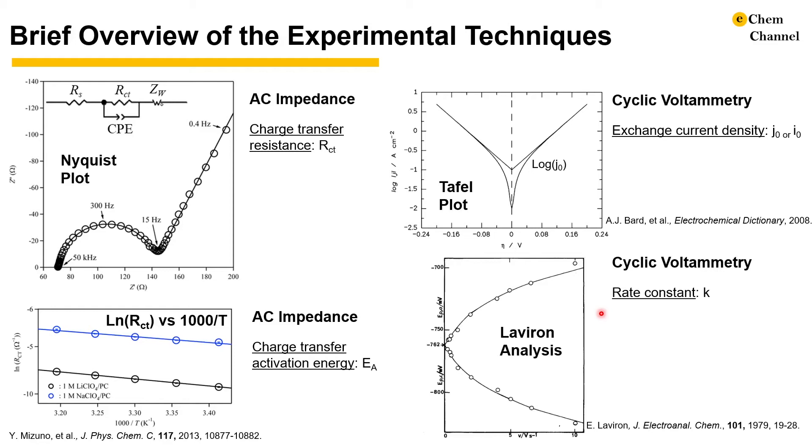For example, exchange current density is important to corrosion science because it can help calculate the corrosion rate in the unit of mm per year with the help of Faraday's laws of electrolysis. Since all of them are connected fundamentally, next I will review a couple of kinetic concepts and present the relationships among them.